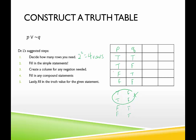Create a column for not q, which is the exact opposite truth value of q. So if q alternates true, false, not q alternates false, true. Then we fill in p or not q. This is a disjunction — true when one or both statements are true. True or false is true; true or true is true; false or false is false; false or true is true. That's the final product for the first example.